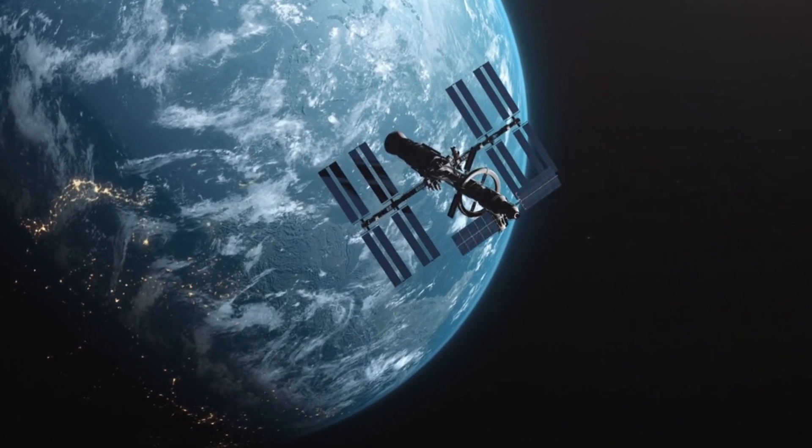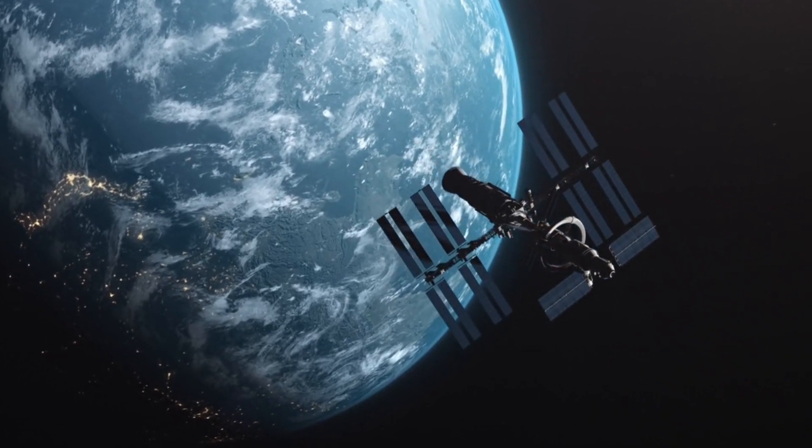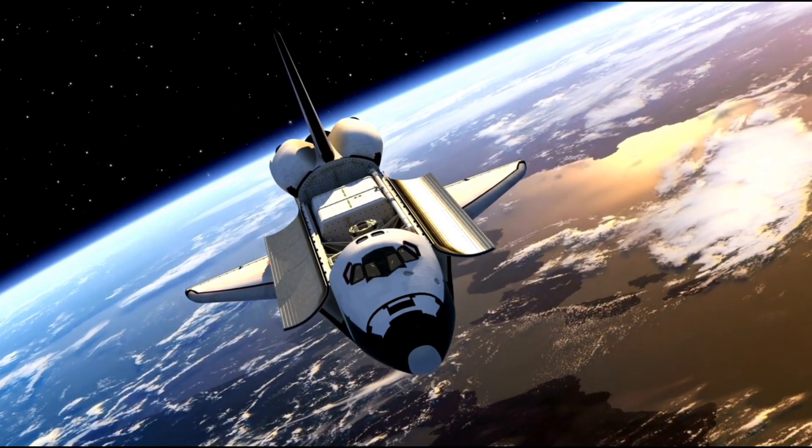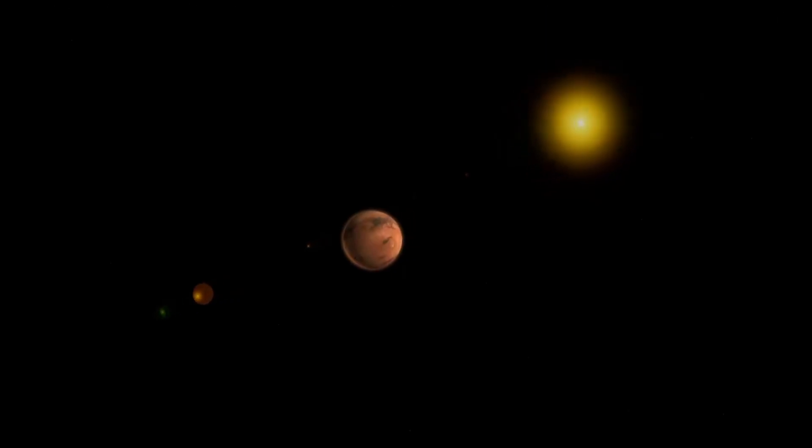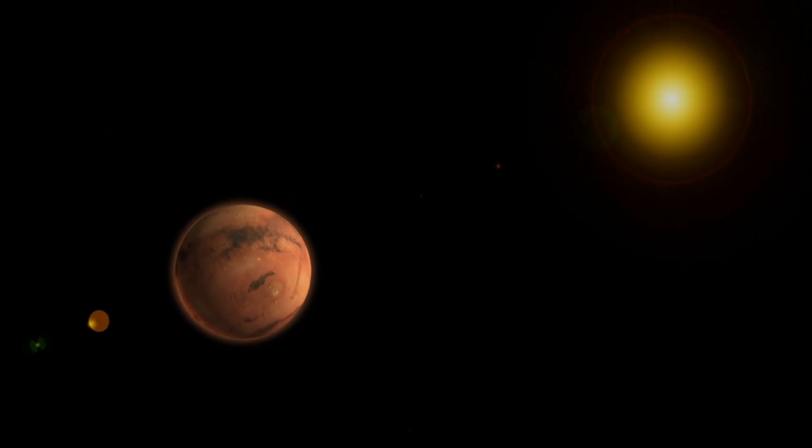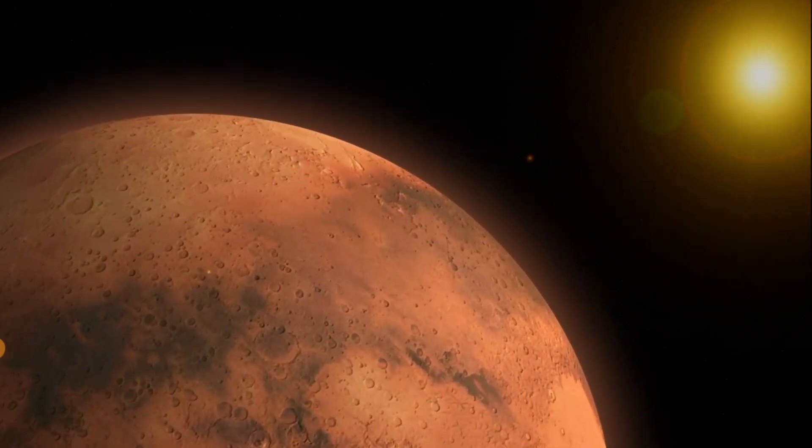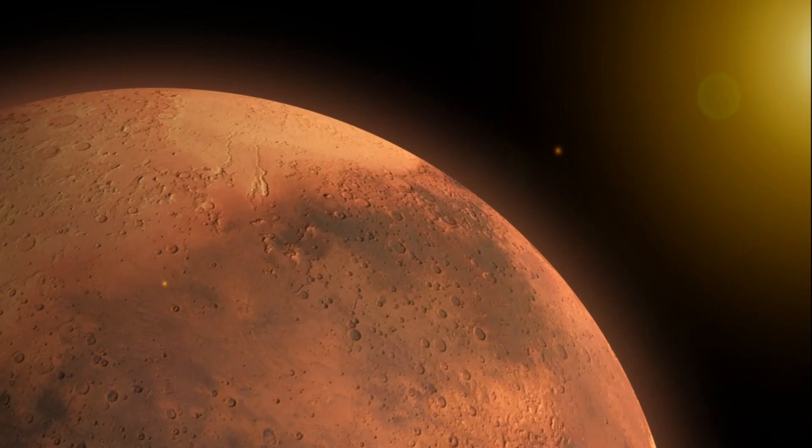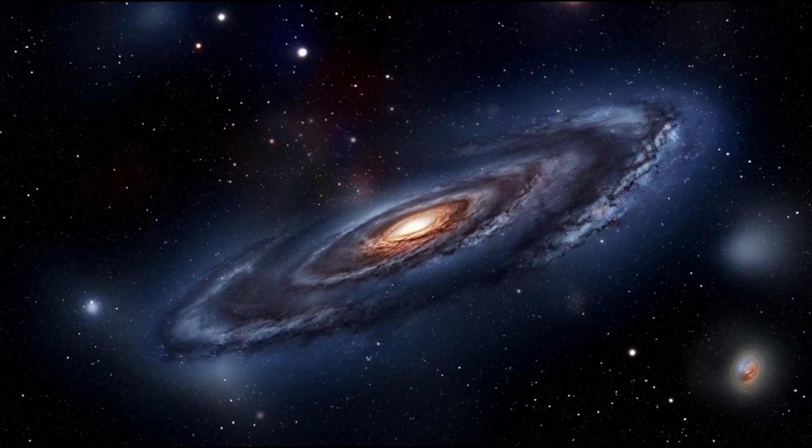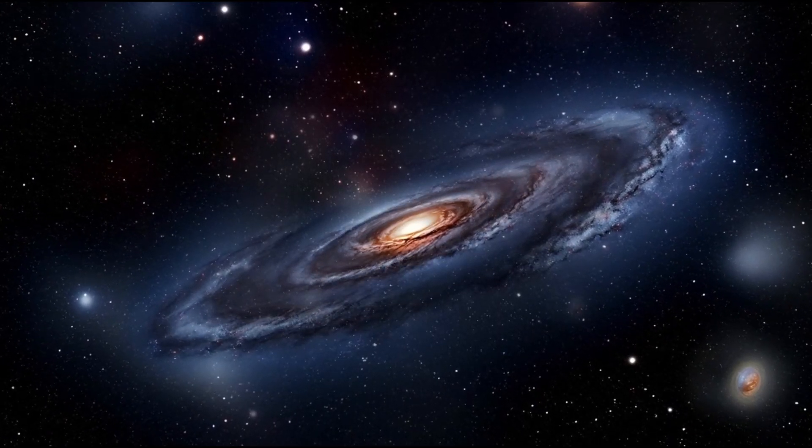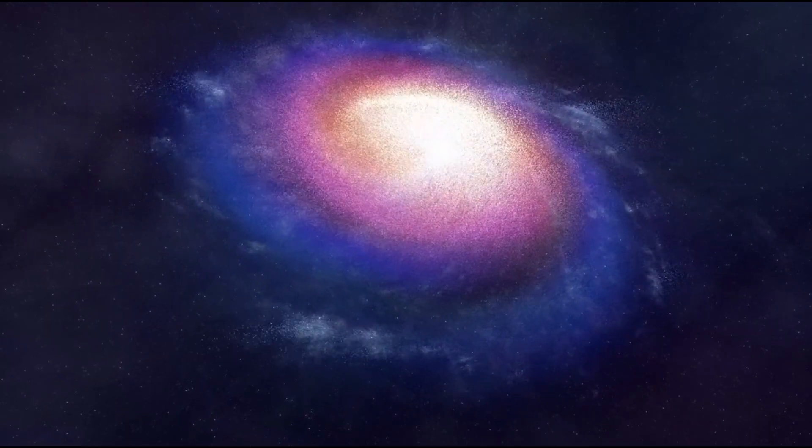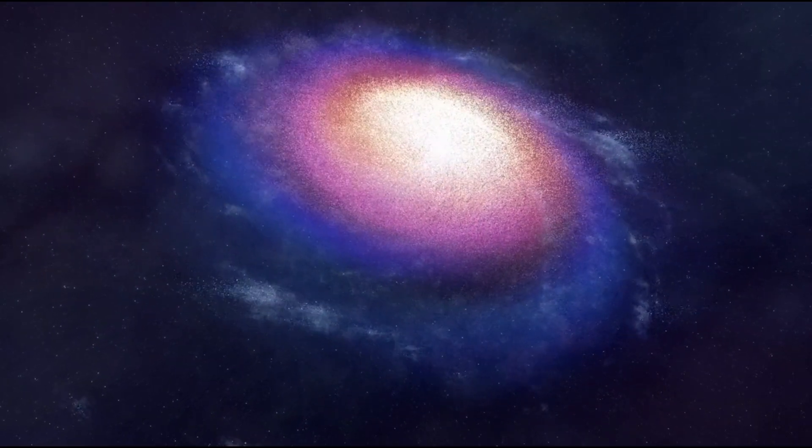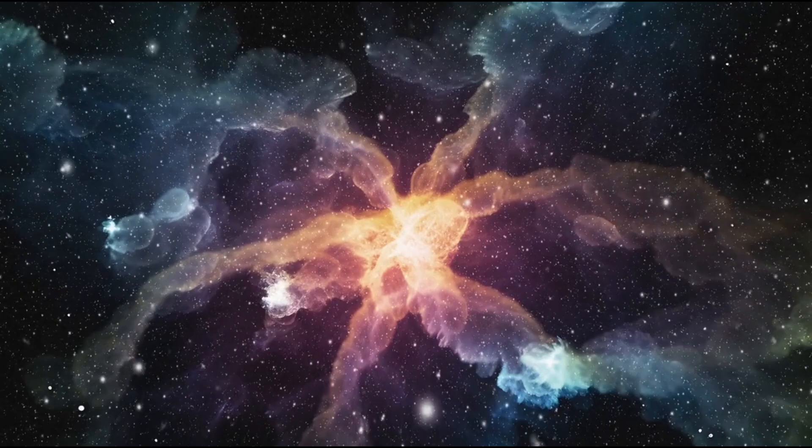However, such intense luminosity comes at a cost. Betelgeuse is expending its energy rapidly, burning through its fuel and speeding up its inevitable demise. The star will eventually exhaust its fuel supply, collapsing under its own gravity and potentially triggering a supernova, a violent explosion that might eventually leave behind either a neutron star or a black hole, assuming current scientific theories hold.